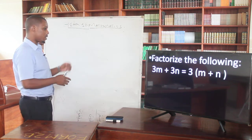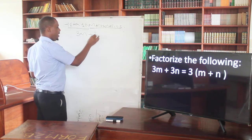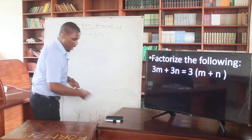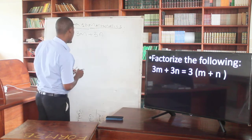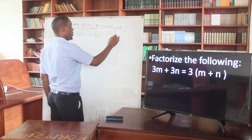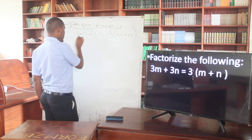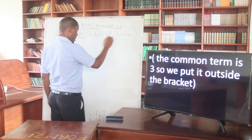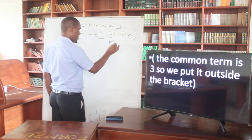For example, factorize 3m + 3n. In this case, you have to look for the common factor. The common factor is 3. So this 3, you move it outside, then you say m plus n inside the bracket. In this case, 3 times m gives your 3m, and 3 times n gives your 3n. So this is what we are calling factorization — we are introducing the brackets.